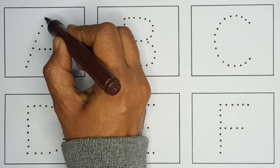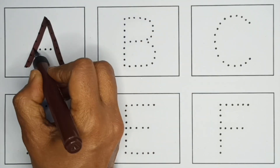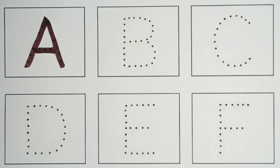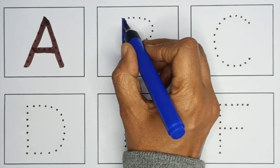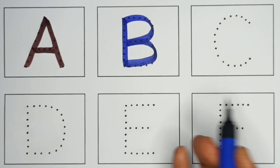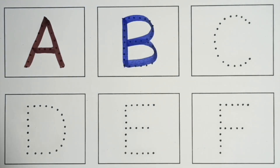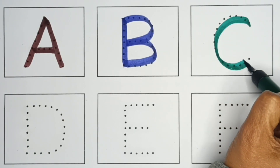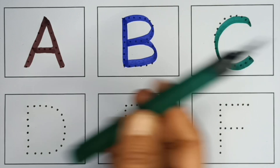A. A for apple, brown color. B. B for ball, blue color. C. C for cat, green color.